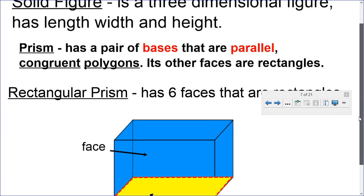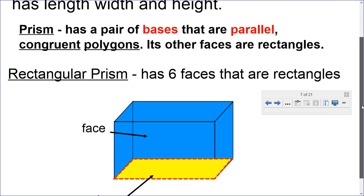A prism has a pair of bases that are parallel. So the bases are parallel, and they're congruent polygons. Its other faces are rectangles.